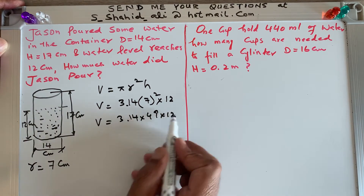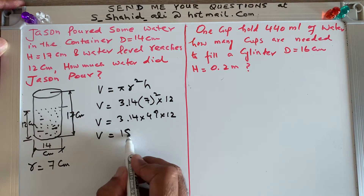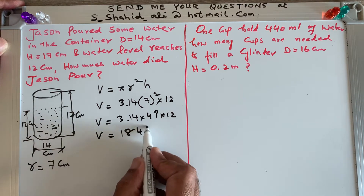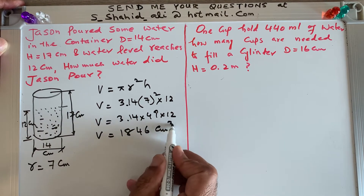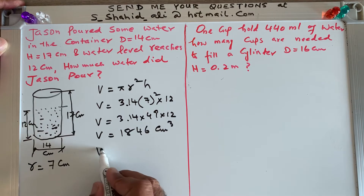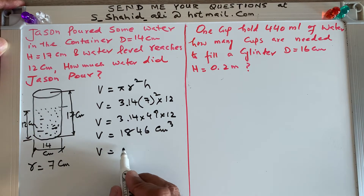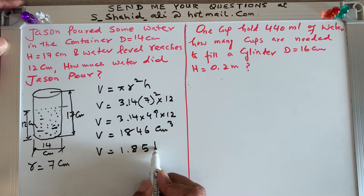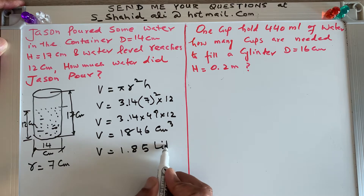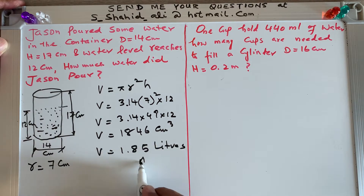That comes out as 1846 centimeters cubed. We can say that Jason poured 1.85 liters. This is the answer.